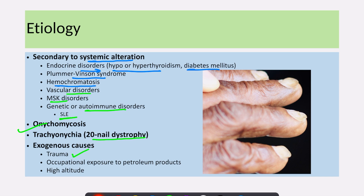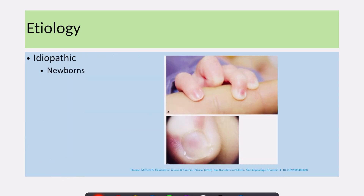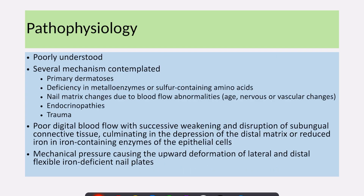There are some other exogenous causes like trauma to the nails, occupational exposure to petroleum products, and high altitude. It can be idiopathic in newborns, as shown in this picture. The pathophysiology of koilonychia is poorly understood and many mechanisms are proposed.